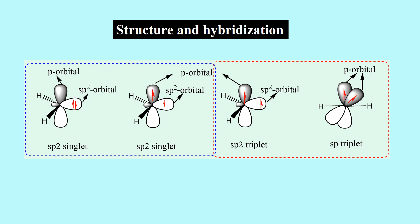Here is the structure and hybridization of carbene. Carbenes are classified either as singlets or triplets depending upon the electronic structure. The ground state depends upon the relative energies of two non-bonding orbitals. If the two orbitals are equivalent, according to Hund's rule electrons are assigned to different orbitals with parallel spin, as in the sp triplet. If two orbitals are not degenerate, the two electrons occupy the lower orbital with spin pairing. Singlet carbenes have a paired electron in the HOMO sigma, with the pi p orbital vacant, giving an sp2 hybrid structure.